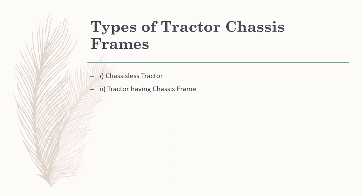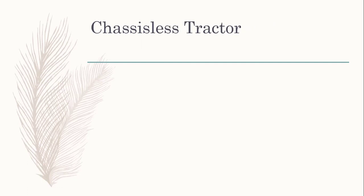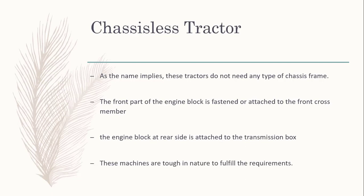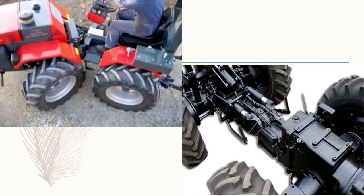There are two types of chassis: the first one is the chassis-less tractor and the second is the tractor with a chassis frame. For the chassis-less tractor, as the name implies, the tractor does not have any type of frame. The front part of the engine block is fastened to the front cross member, and the rear side of the engine is attached to the transmission box. Let's look at the images to understand this clearly.